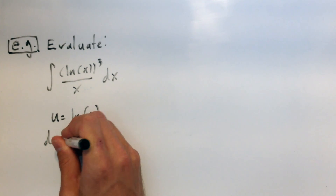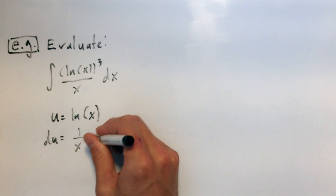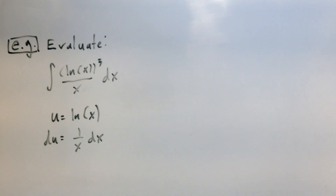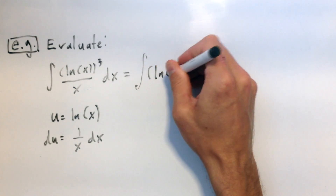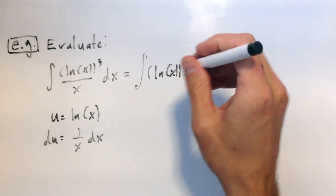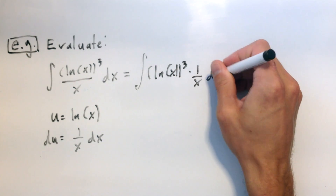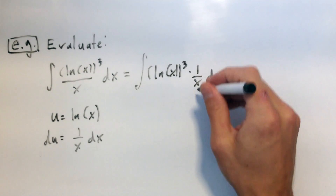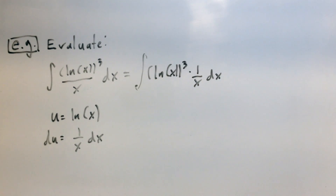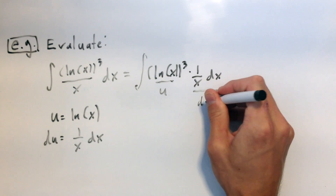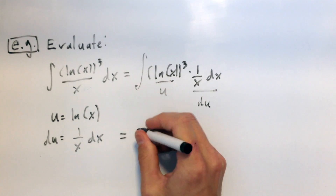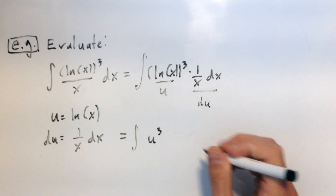Then du is going to be the derivative of natural log, which is 1 over x, times dx. Sometimes you might want to rewrite the integral to help you see what's going on. This is the integral of the natural log of x cubed times 1 over x dx. Dividing by x is the same as multiplying by 1 over x — and that is precisely du. Natural log of x is u, and 1 over x dx equals du. So this becomes the integral of u cubed du.